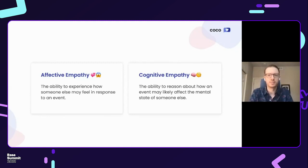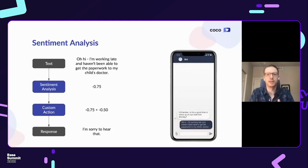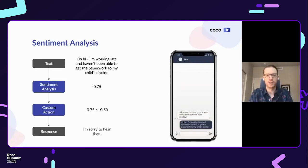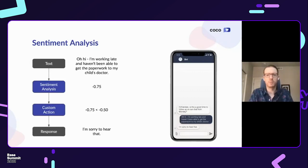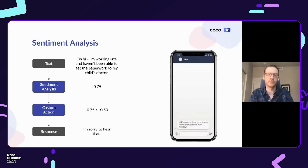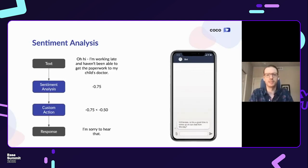For a long time, chatbots have relied on sentiment analysis to understand a user's emotional state and respond using rule-based policies. As an example, in a scheduled bot check-in, the user indicates they are working late and weren't able to connect with their child's doctor's office to submit some paperwork. A sentiment analysis component assigns a score between negative one and one to this utterance, and a threshold policy defines sentiment below negative 0.5 as negative, dispatching it to the NLG component, which results in a response like 'I'm sorry to hear that.' This technique is incredibly coarse and results in inauthentic responses that fail to improve users' perception of being heard.